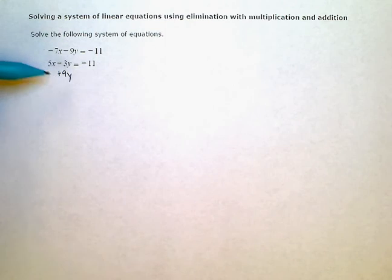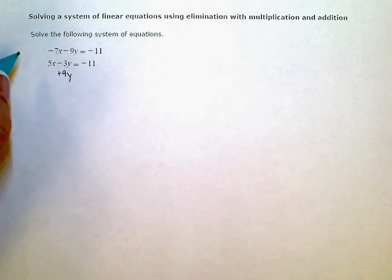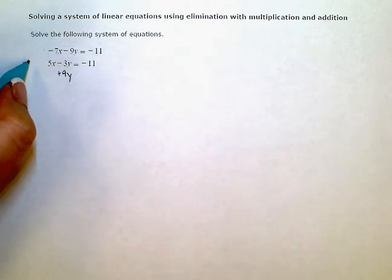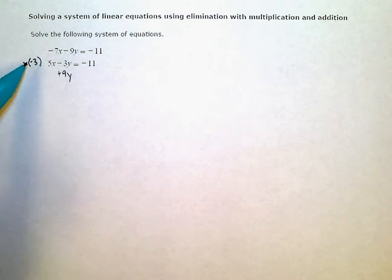So I would need to multiply negative 3 by another negative 3 to get positive 9. So negative 3 times negative 3 would give me this positive 9.